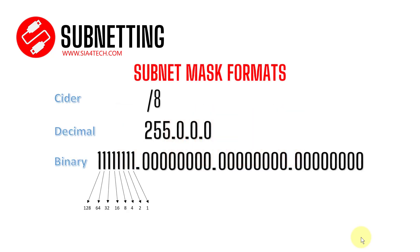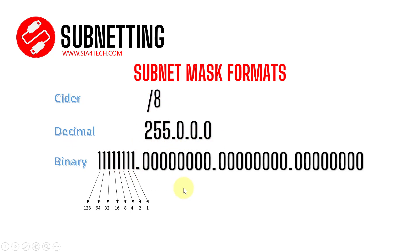Before we get started, I would like to go through the subject of mask formats. As you know, we have a format called CIDR or shorthand, usually written like this — before the slash you will see the IP address. The most common formats are decimal, which is 255.0 or something like this, and binary.